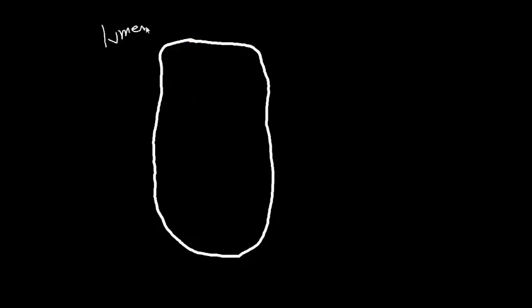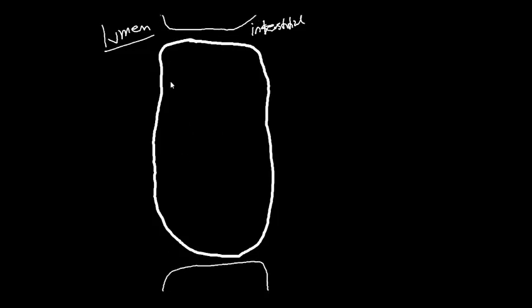We've got a cell diagram here with a luminal side and an interstitial side. Everything that gets stuck in the lumen will get excreted; everything on the interstitial side gets reabsorbed into the blood. We're just taking a snapshot of a single cell lining that lumen, with more cells on either side.